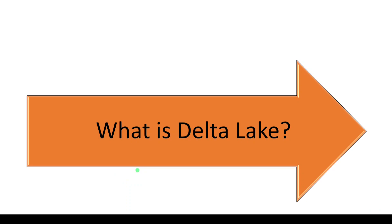What is Delta Lake? Delta Lake is nothing but one additional layer sitting on top of data lake which provides features like ACID transactions. Data is stored in the form of files and it does not allow ACID transactions — that was one of the shortcomings with data lake. So as a result, Databricks introduced Delta Lake, which provides many features including performance improvement, and one of the important features is ACID transaction.